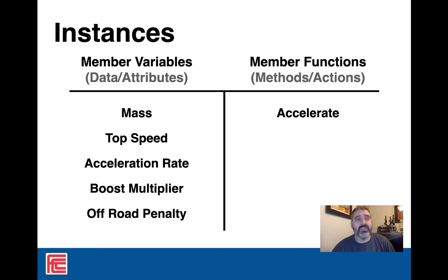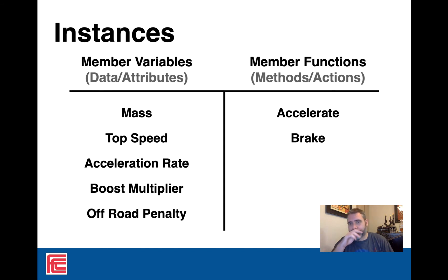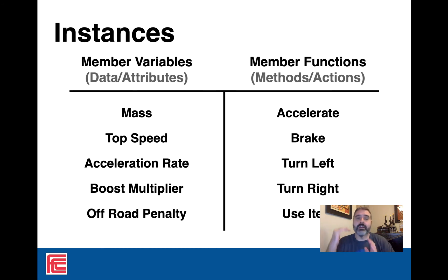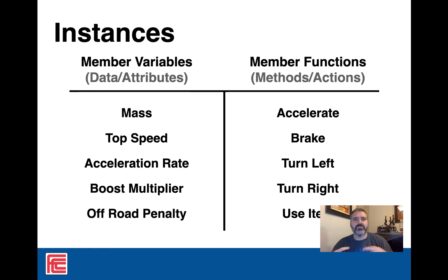Member functions are easy — in video games they're usually tied to button presses. We need a button to go faster, a button to brake, to turn left, to turn right, and to use an item — throw shells, activate a mushroom, whatever. Member functions are actions that I can take on my object. I want my cart to accelerate — not anybody else's. I want to launch my shell right now, not somebody else's. Those actions need to take place on my object, my cart.